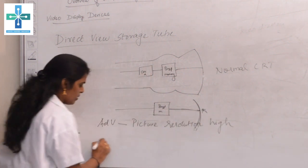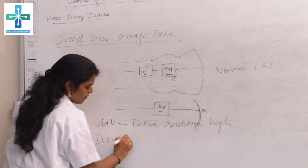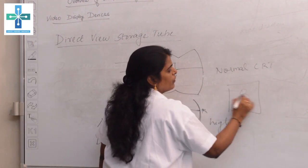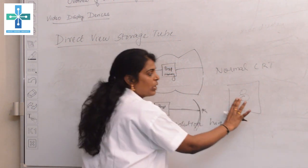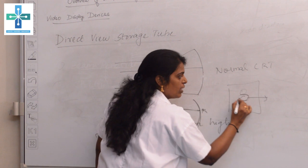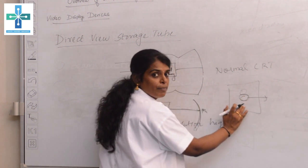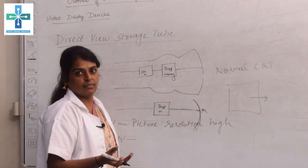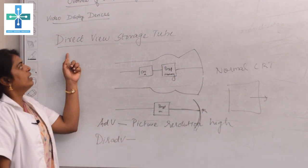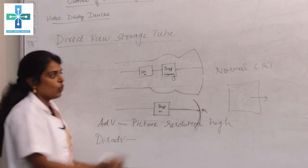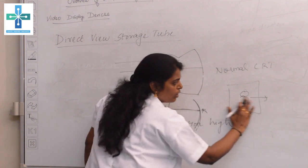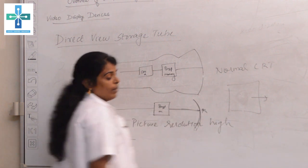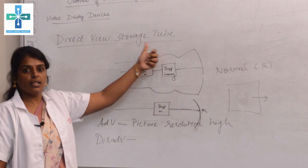The disadvantage of the direct view storage tube is that if you want to remove any part of the picture, you cannot erase just that part alone. If you want to erase any portion, you have to erase the whole picture entirely. That is the main disadvantage of the direct view storage tube.